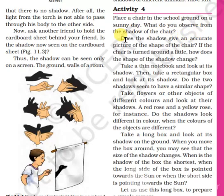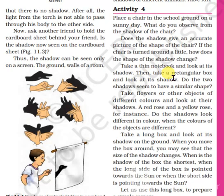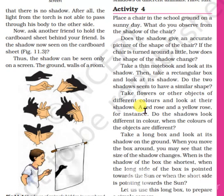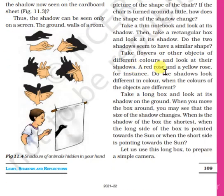Activity: Place a chair in the school ground on a sunny day. What do you observe from the shadow of the chair? Does the shadow give an accurate picture of the shape of the chair? If the chair is turned around a little, how does the shape of the shadow change? Take a thin notebook and look at its shadow, then take a rectangular box and look at its shadow. Do the two shadows seem to have a similar shape? Take flowers or other objects of different colors and look at their shadows.